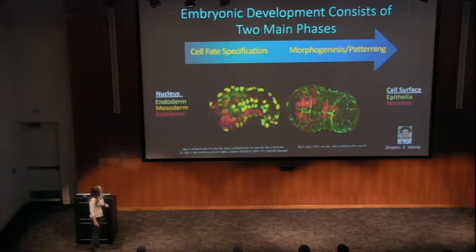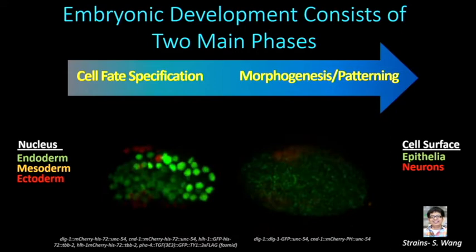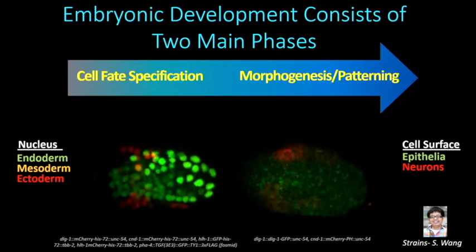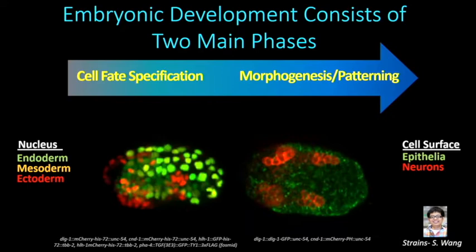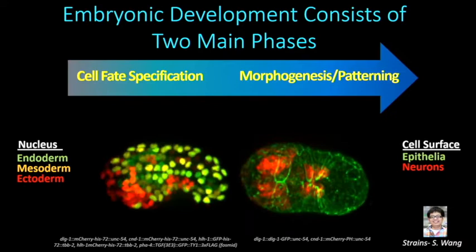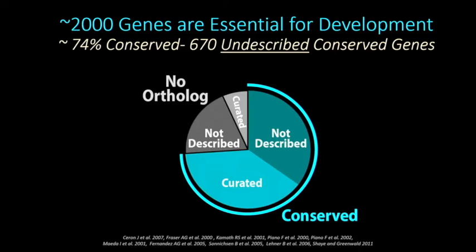We're studying embryonic development, and there are two main phases: cell fate specification and morphogenesis. To capture these two main phases, we've built two custom-engineered strains that capture the endoderm, mesoderm, and ectoderm in the strain on the left, using tissue-specific promoters to drive the expression of fluorescently labeled histones. On the right, we have cell surface markers of the epithelia in green and neurons in red. We use these two strains in combination with the 2,000 genes previously identified to be embryonic lethal in C. elegans.